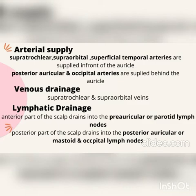Next is the arterial supply of the scalp. In front of the auricle, the scalp is supplied by the supratrochlear, supraorbital, and superficial temporal arteries. Behind the auricle, the scalp is supplied by the posterior auricular and occipital arteries.